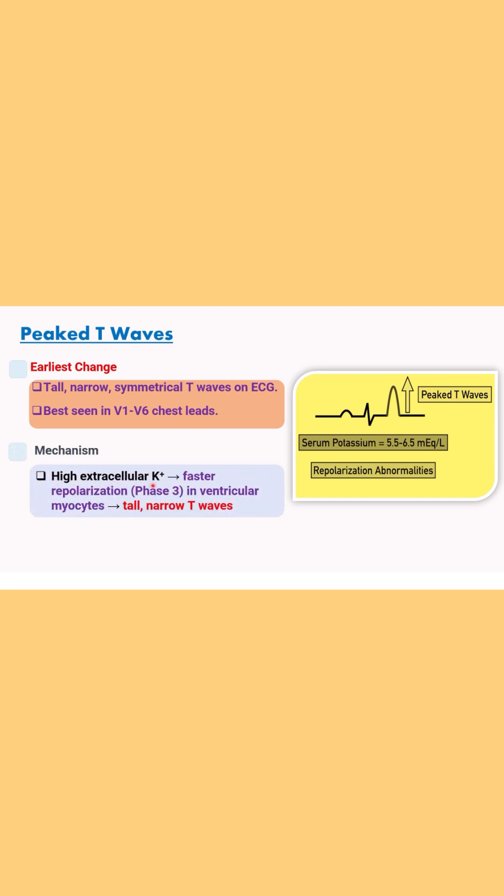And the reason is due to the increased potassium levels, there is faster repolarization phase 3 in the ventricular myocyte which leads to the formation of these tall narrow T waves.